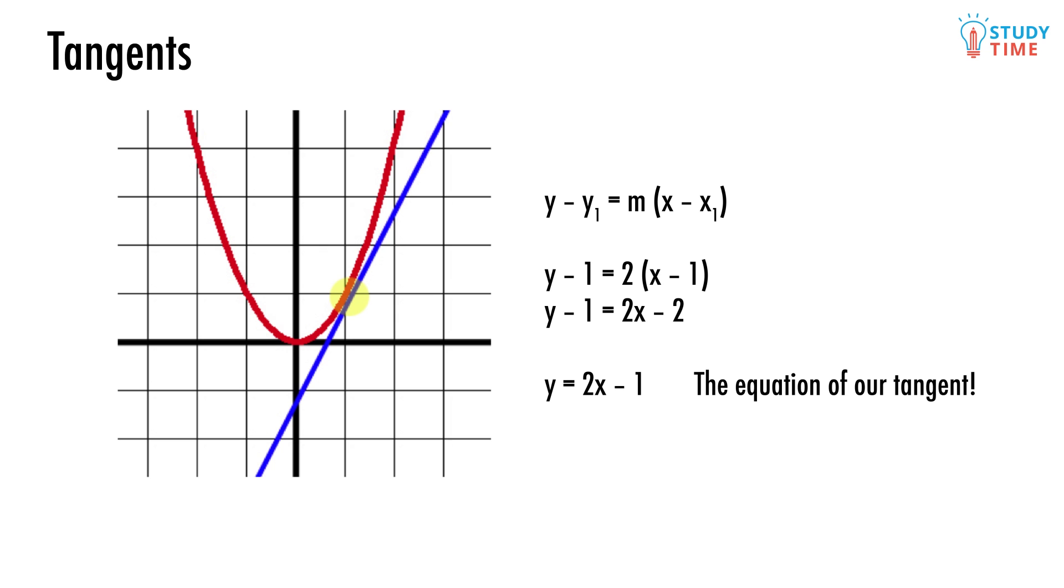We need to use this straight line equation here: y minus y1 equals m times x minus x1. We replace y1 with a 1, x1 with a 1 as well, and m with a 2. So y minus 1 equals 2 times x minus 1.